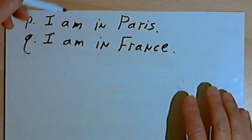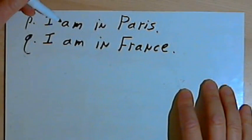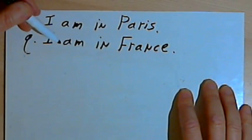So let's start with two simple statements. Statement P, I am in Paris, and statement Q, I am in France.